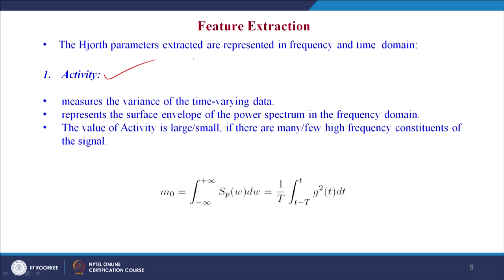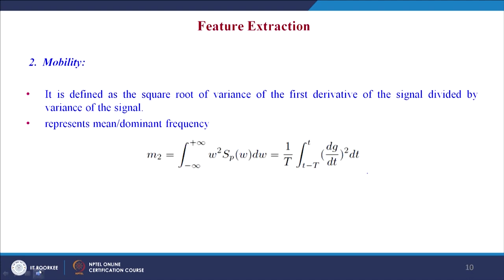There are three Hjorth parameters: activity, mobility, and complexity. Activity is the measure of the variance of the time-varying data; it represents the surface envelope of the power spectrum in the frequency domain. The value of activity is larger if there are many high-frequency constituents of the signal. It is given by the expression: (1/T) × integral from −T to T of g²(t) dt — the variance of the time-varying signal. Mobility is the first derivative of activity, defined as the square root of the variance of the first derivative of the signal divided by the variance of the signal, and it represents the mean or dominant frequency.